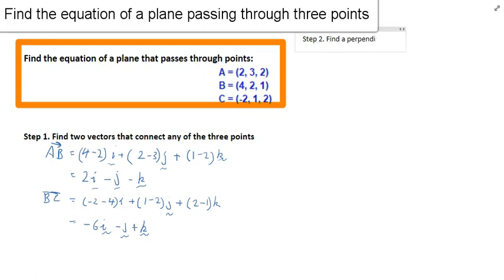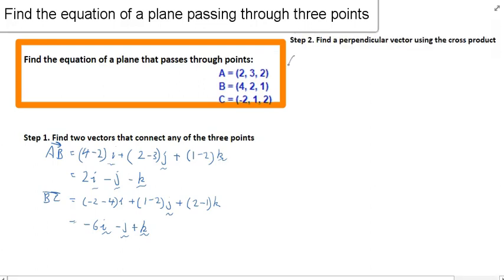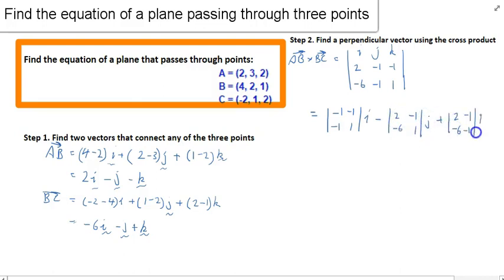Step 2, now we're going to find a perpendicular vector using the cross product. We've got vector AB, vector BC, determinants I, J, K. Now just while I'm calculating this, it's probably important to note why we're doing this. Remember that a plane can be defined by a single point and a line that's perpendicular to that single point.